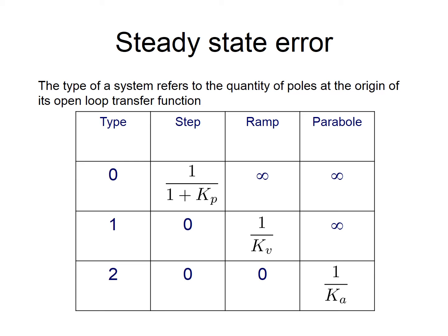A PI controller contains an integral action. This integral action is transformed into the s-domain as 1 over s, meaning we divide by s, which gives us a pole at the origin. What we need to do is design a controller transfer function containing a pole at the origin. Let us make some examples.